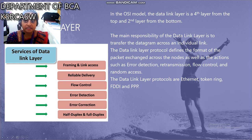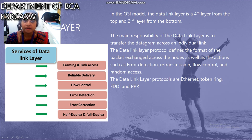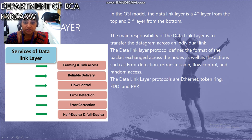The data link layer protocol defines the format of the packets exchanged across the nodes, as well as the actions such as error detection, retransmission, flow control, and random access. The data link layer protocols include Ethernet, Token Ring, FDDI, and PPP.